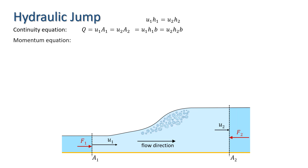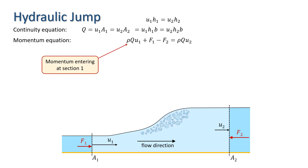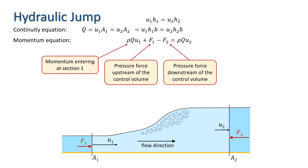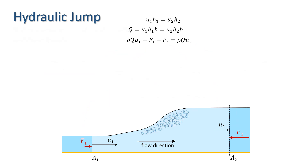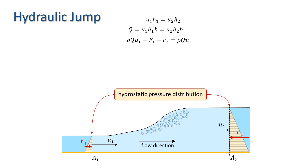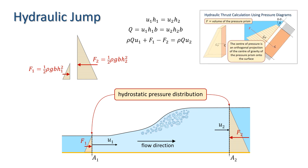Next we apply the momentum equation, giving rho·Q·U1 plus F1 minus F2 equals rho·Q·U2, where F1 and F2 are the pressure forces acting on the control volume. Note the direction of these forces — they are acting inwards on the control volume. If we assume a hydrostatic pressure distribution at cross sections one and two, then F1 and F2 can be evaluated using the pressure prisms shown here. If this doesn't look familiar, you might like to look at my previous video on hydraulic thrust calculation using pressure diagrams.